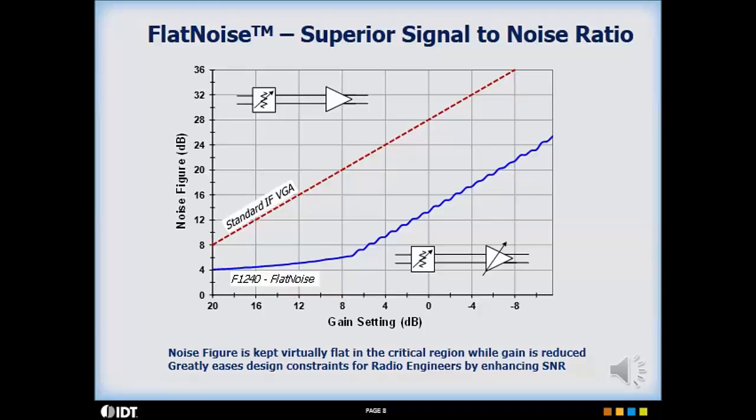Noise figure versus gain is plotted for a standard IF VGA shown by the red curve, and for the IDT F1240 VGA shown by the blue curve. The red curve illustrates what happens to the noise figure when the attenuator value is increased to reduce the gain of a standard VGA.